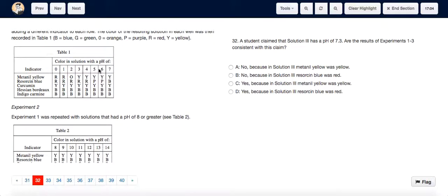For question 32, when we look at Table 1 and we look at a solution with a pH 7, because the question mentions pH of 7.3, so we have to look at the closest one, we can see that methanol yellow...